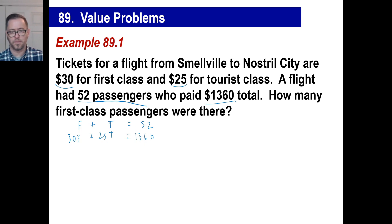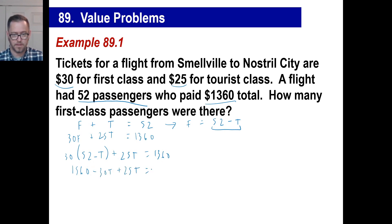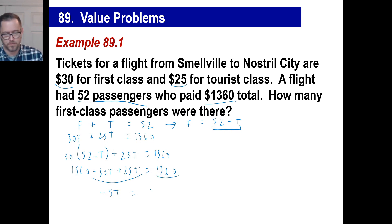Let's try substitution since this looks pretty easy. Write F equals 52 minus T, and substitute: 30 times (52 minus T) plus 25T equals 1360. That gives 1560 minus 30T plus 25T equals 1360. Combining terms gives negative 5T, and 1360 minus 1560 is negative 200.